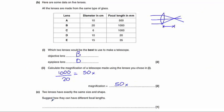And the final part, two lenses have exactly the same size and shape. Suggest how they can have different focal lengths. Well, there's a few answers you could have here, but the easiest one I would say is to say that they are made of different materials.